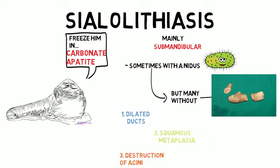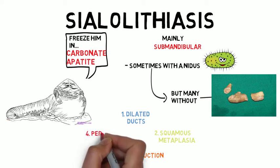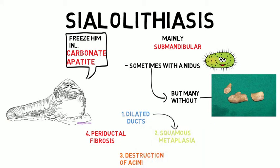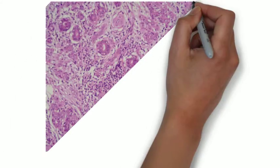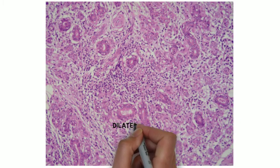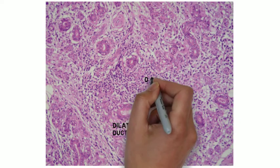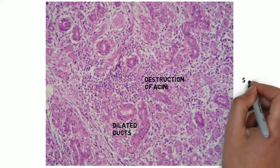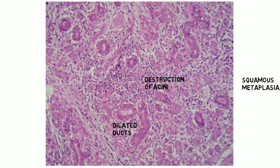This is often presented in textbooks as a sequential process; however, in a given section you'll see all four findings. There are mildly dilated ducts, destruction of acini with infiltrating lymphocytes, and perioductal fibrosis — though squamous metaplasia may not always be apparent in every photo.